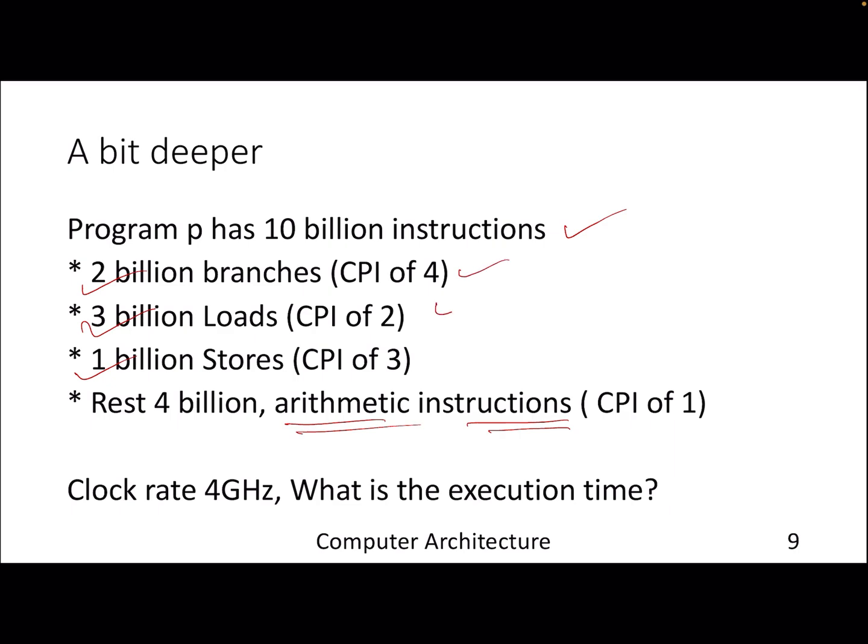If I want to get deeper, maybe you can try this on your own. Let's say a program P has 10 billion instructions in total, out of which 2 billion branches, 3 billion loads, 1 billion stores. We are done with 6 billion, and then the rest 4 billion are all arithmetic instructions. Each of them have their different CPIs - 4, 2, 3 and 1. Assuming the clock rate is 4 gigahertz, what will be the final execution time? Pretty straightforward - the clock time is 0.25 nanosecond. You have to multiply the instruction count with the CPI for each of these instructions and then finally multiply by 0.25 nanosecond. That will give you the final execution time.